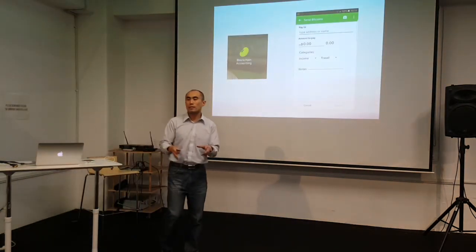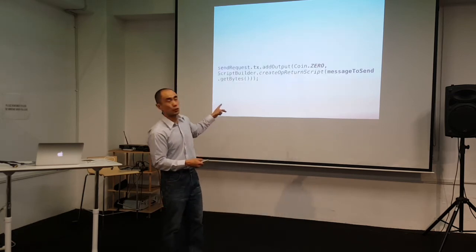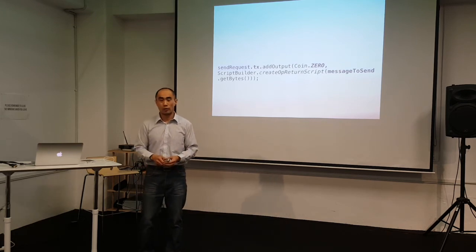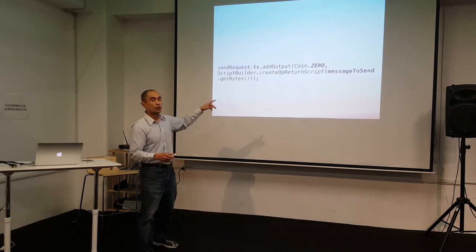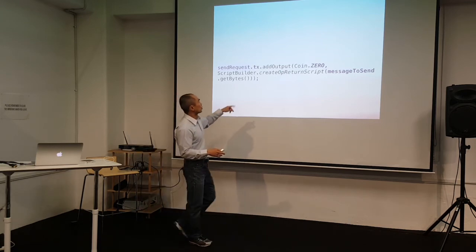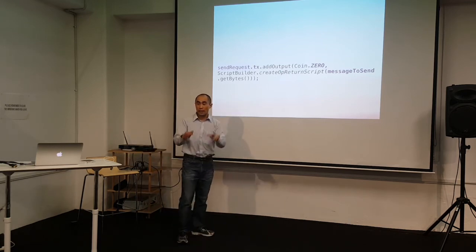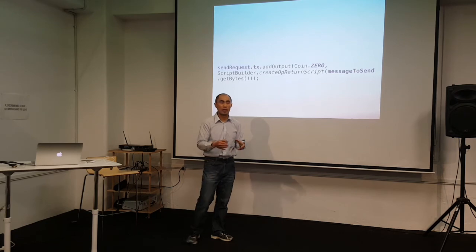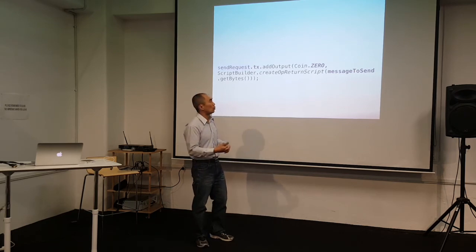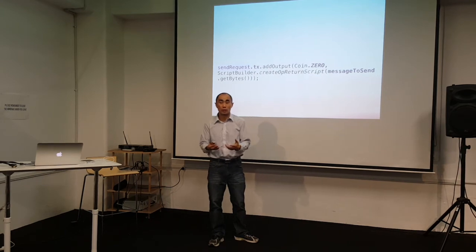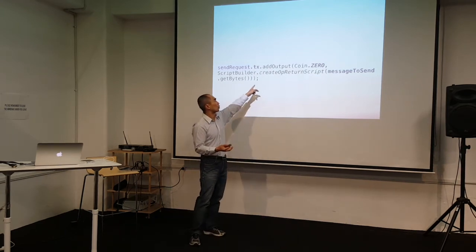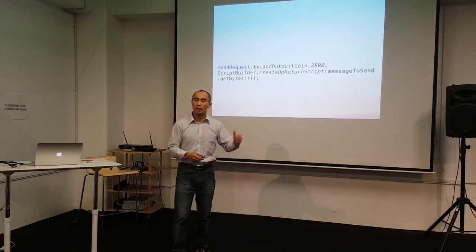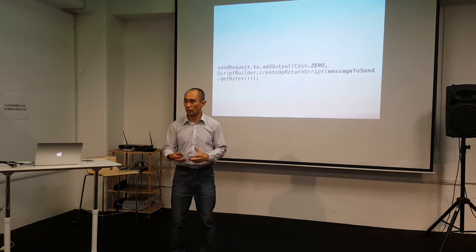Now, the key to making this work was this line of code here. This actually took me about a week to figure out — it was pretty tricky. What this line of code means is that I'm creating a transaction and adding to the output a zero-coin transaction. On that coin, I take the message I want to send — those custom notes — and I create what's called an OP_RETURN script. That was the secret piece of code that makes all of this work.